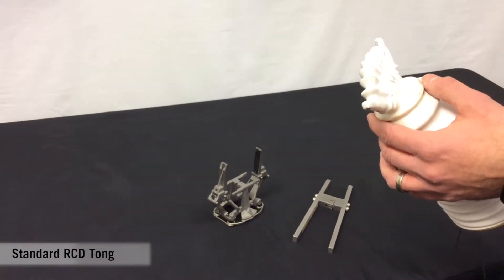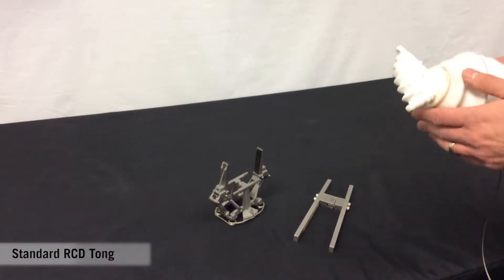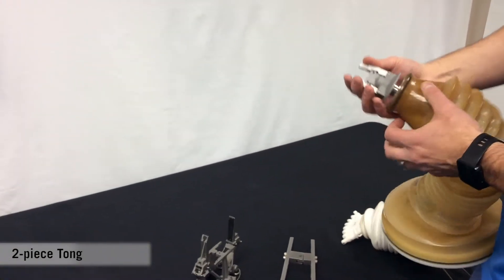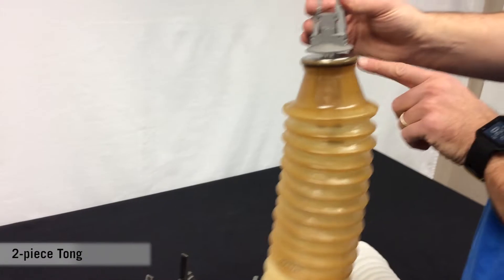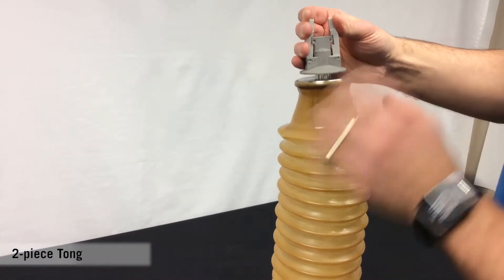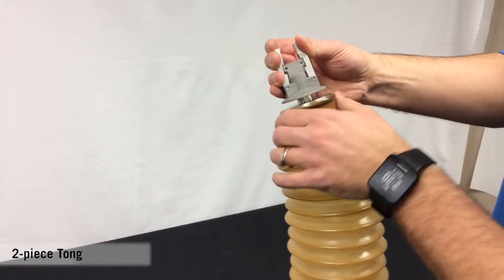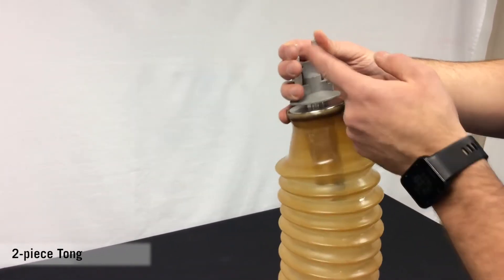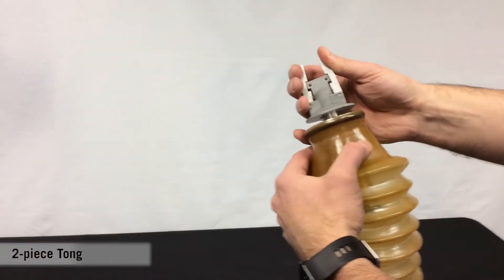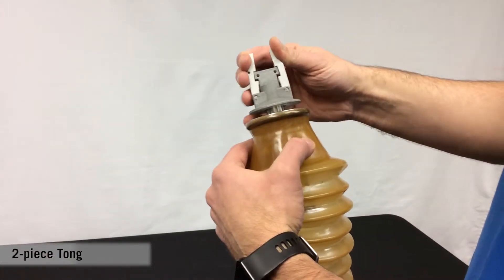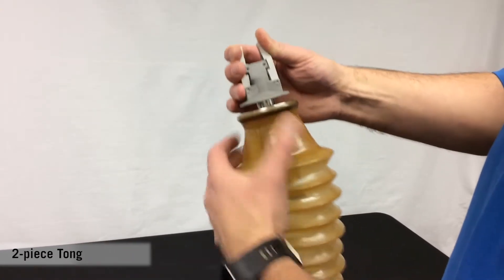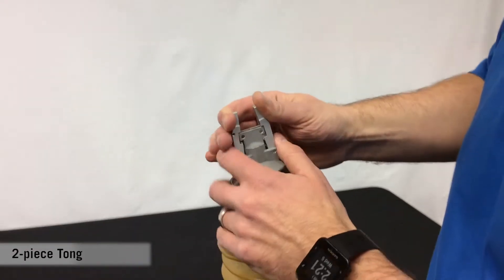One option that we have now for the RCD tong is what we call a two-piece tong. You can see the boot material stops right here, short of where the tong is. It's sealed to the manipulator and there's actually an O-ring seal for the cables going through there too, so you do not have any air streaming through the manipulator and onto your product or streaming out into your operators.